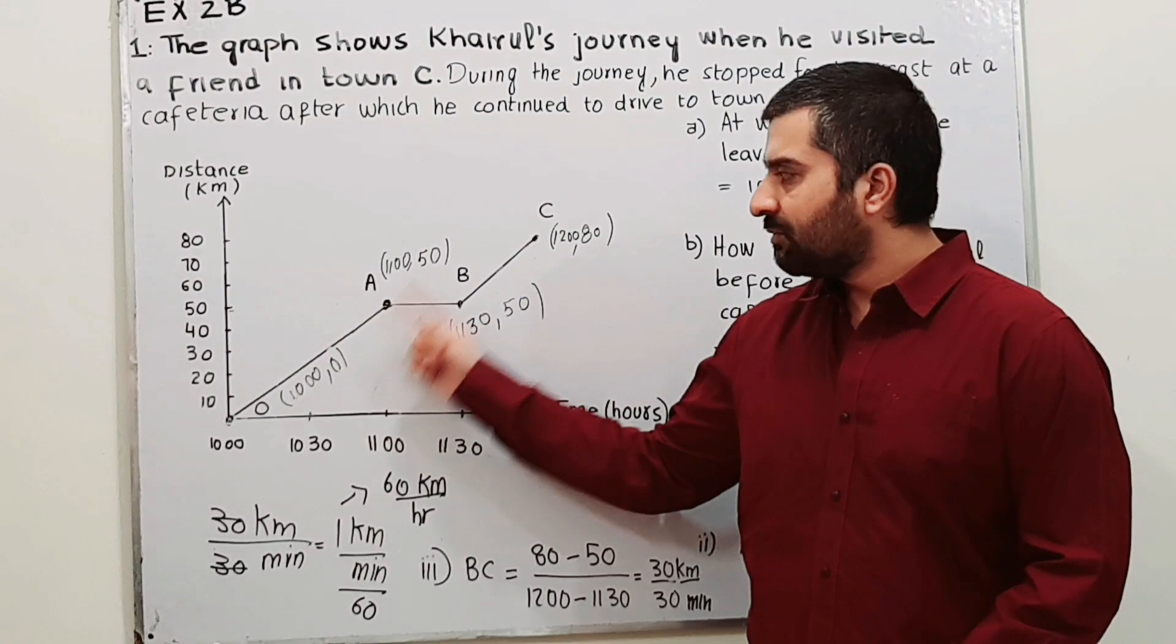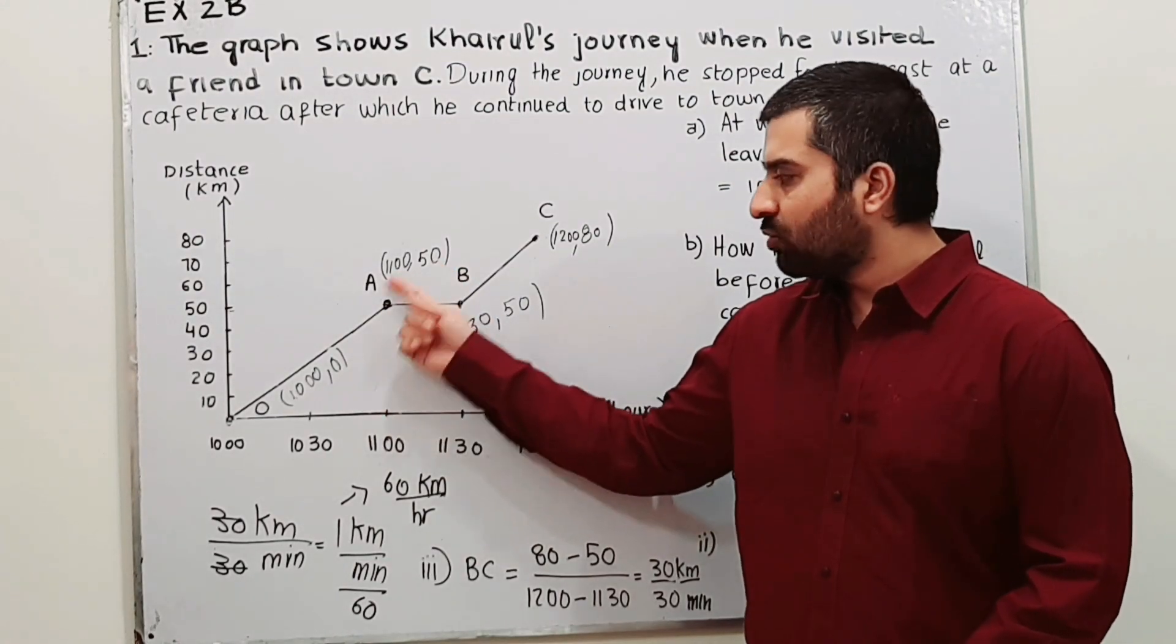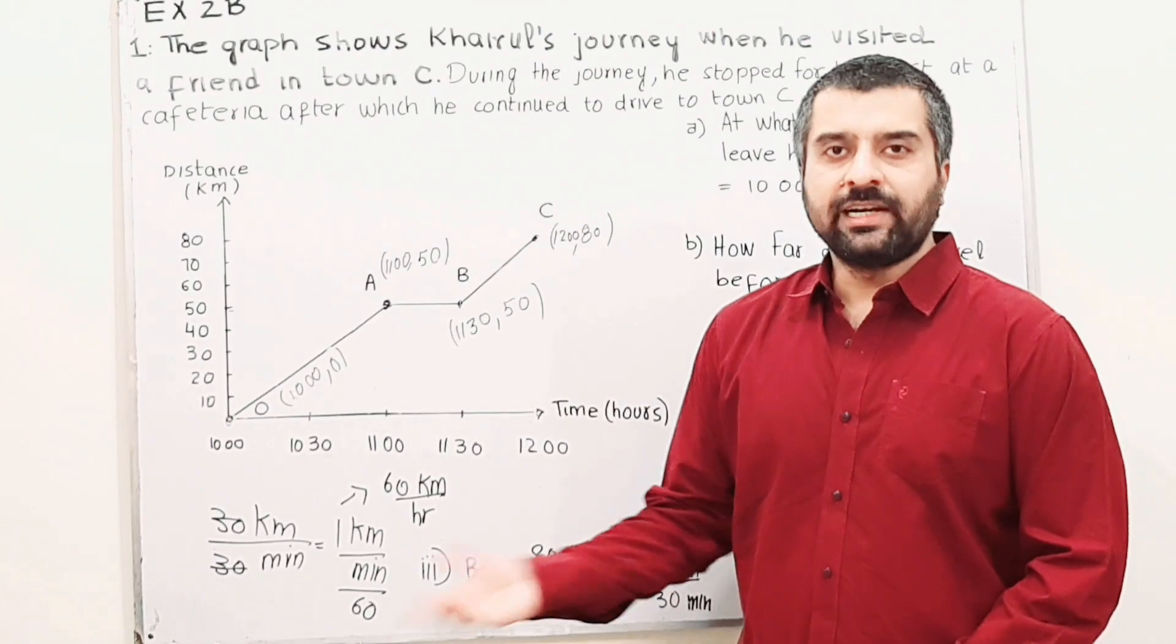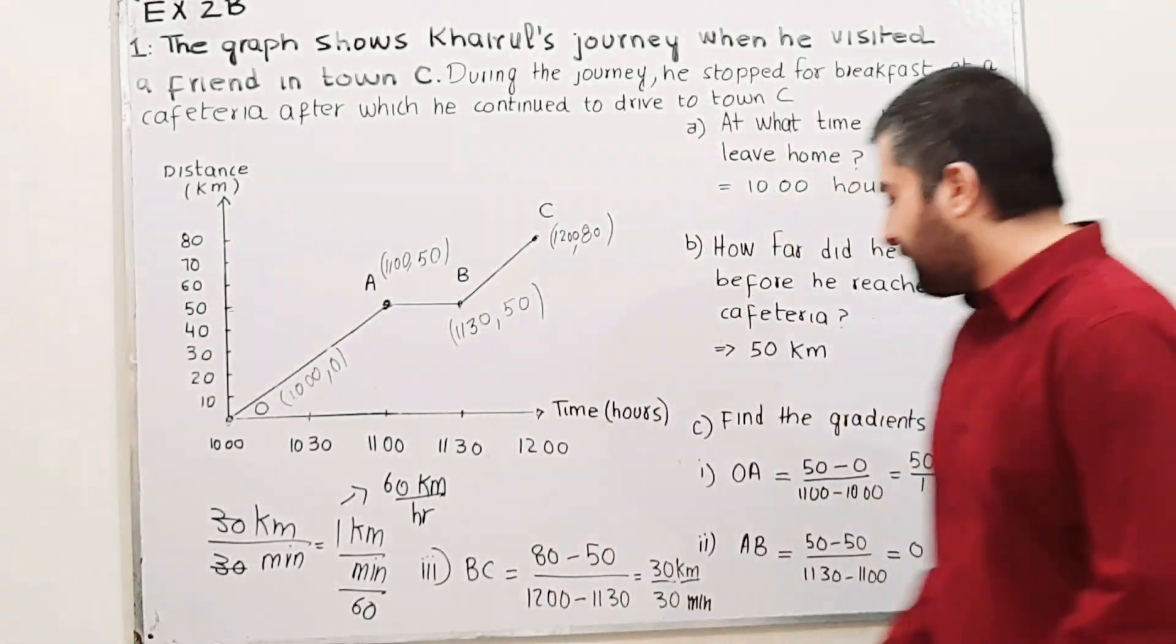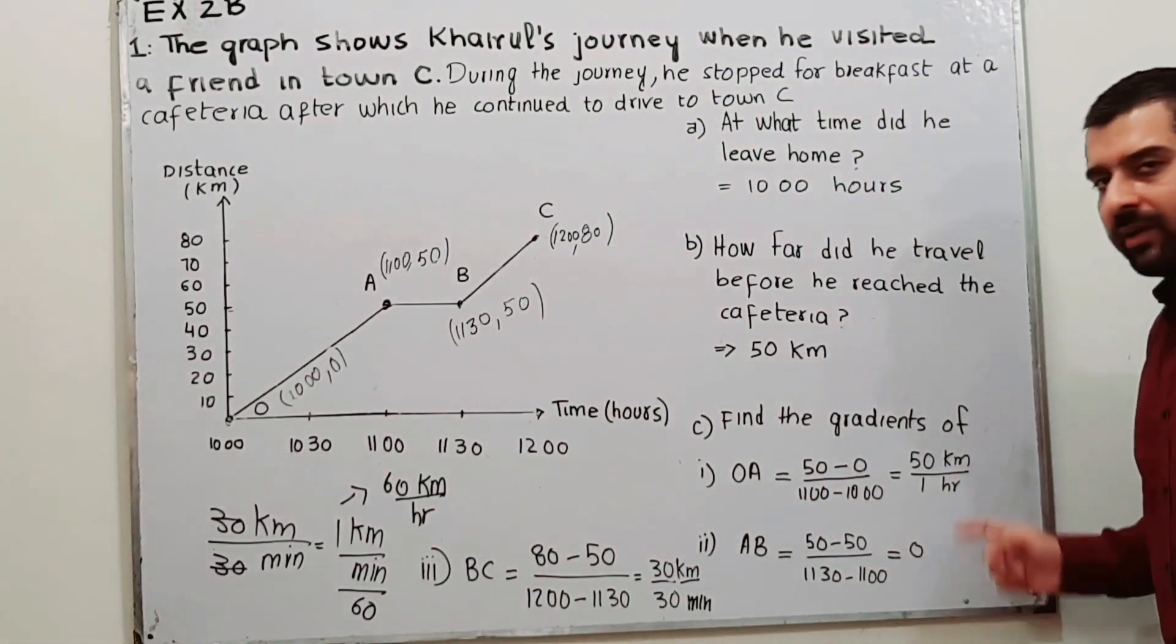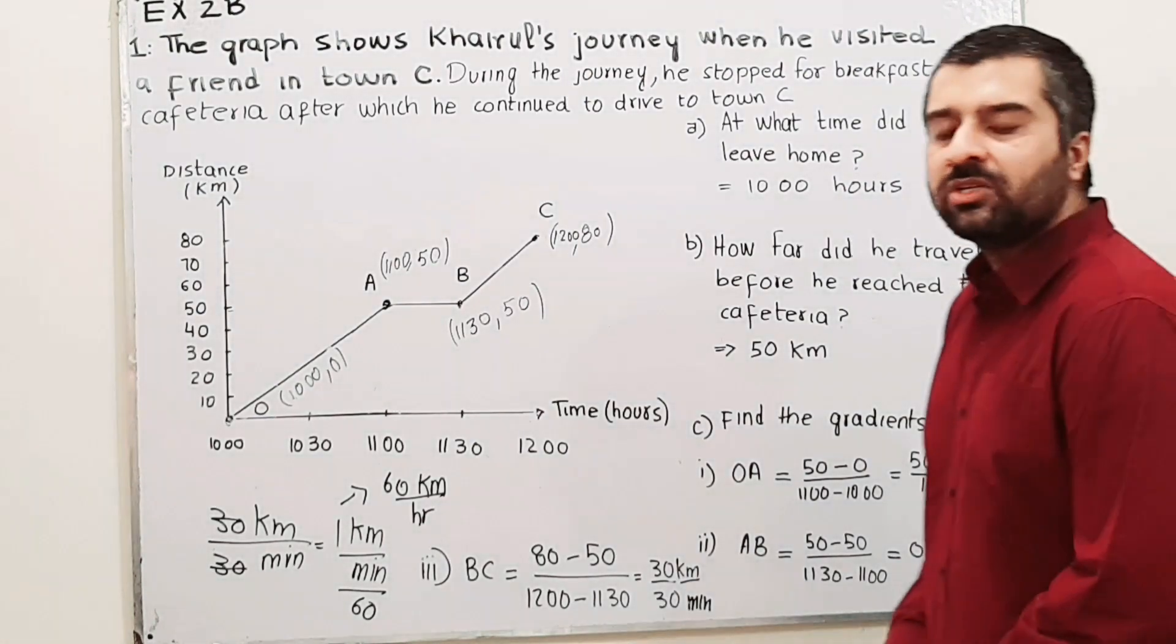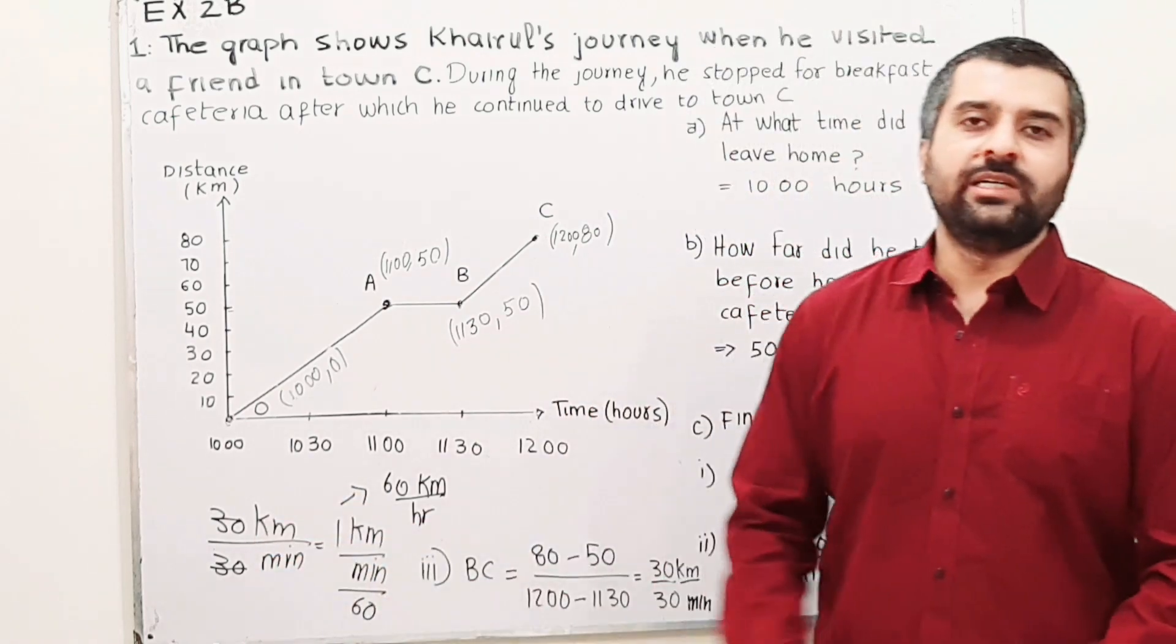Use y2 minus y1 divided by x2 minus x1: 50 minus 0 divided by 11 minus 10. That is 1 hour. So the answer is 50 kilometers divided by 1 hour. What does this show? This shows speed, 50 kilometers per hour. The gradient shows the speed.